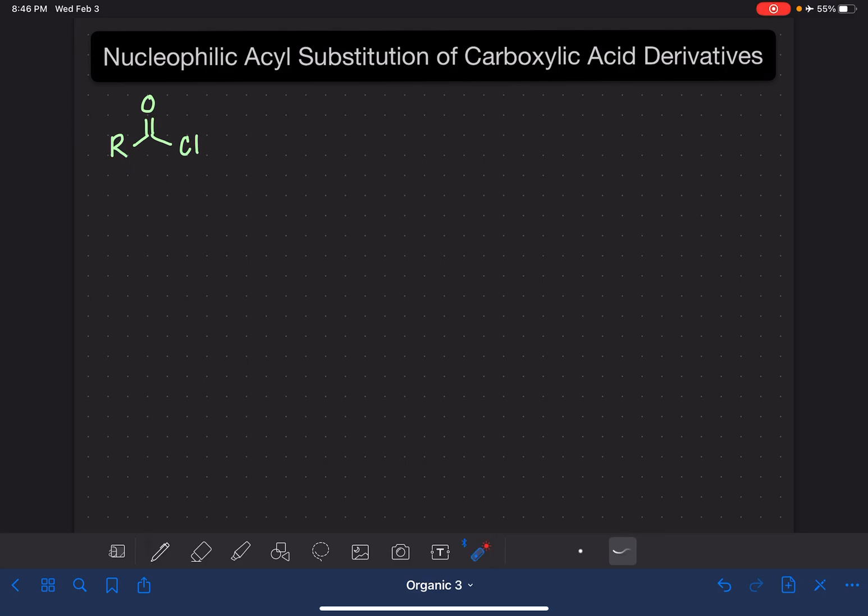This is one of the carboxylic acid derivatives. Instead of having an OH group on the end, it has a halogen, typically a chlorine, but it could also be a bromine. This type of molecule is called an acyl halide. Specifically, this one is an acyl chloride.